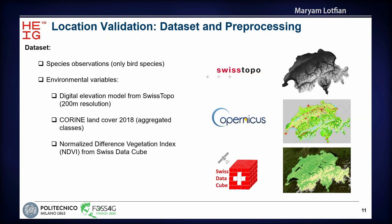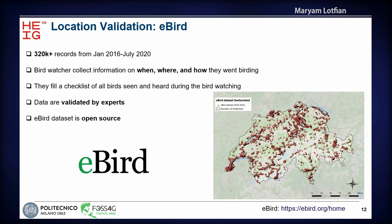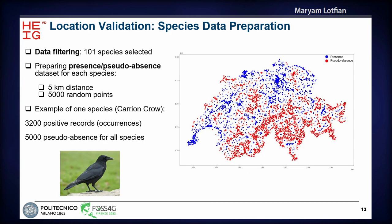For the input data, we used species observations — in this case only bird observations. For the environmental features, we used elevation, Corine land cover, and NDVI from Swiss Data Cube. For the bird species dataset, we used the eBird platform, which is a citizen science platform to collect bird observations worldwide, and the data is free and open source. We obtained data already validated by experts for Switzerland. We filtered the data so that for each species there were at least 100 observations, and as a result we ended up with 101 species selected.